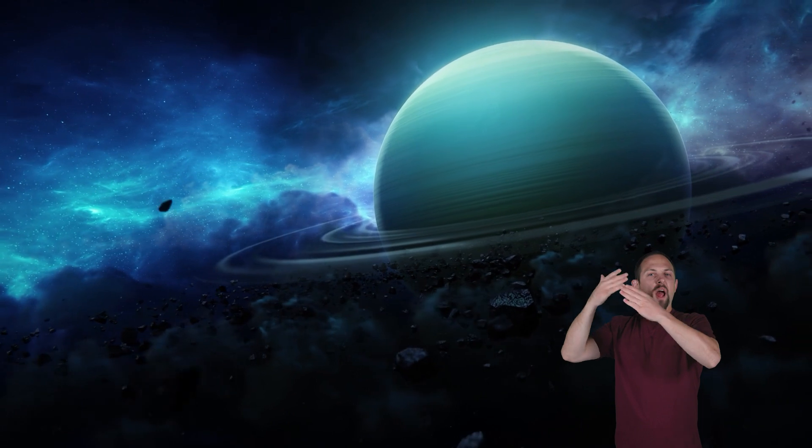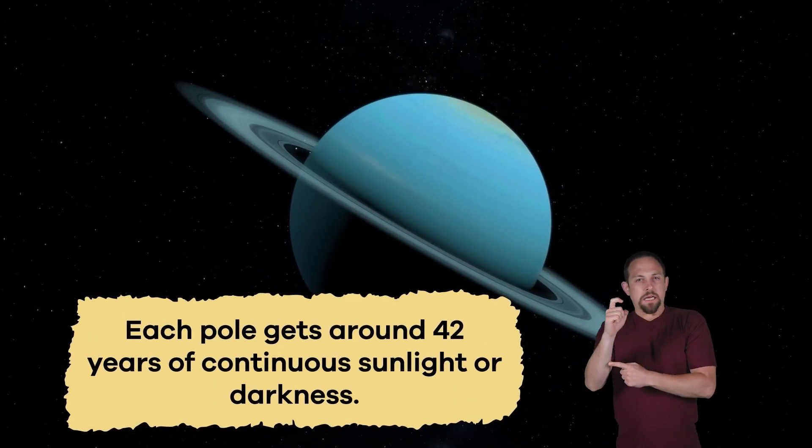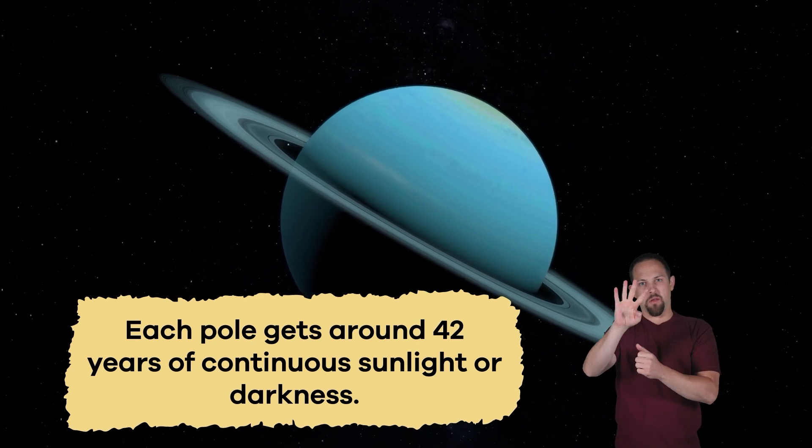The tilt, coupled with its cold temperatures, means that Uranus experiences violent winds, storms, and extreme seasons. Each pole gets around 42 years of continuous sunlight or darkness.